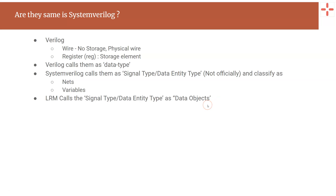If you open the latest SystemVerilog LRM, which is the 2018 IEEE standard, you will see data objects and data types. The data object is nothing but the category of data entity in SystemVerilog, and those are nets and variables. A net represents a physical net or physical wire, and a variable represents a storage element. Note that nets and variables are not data types — they are data objects or data entity types.